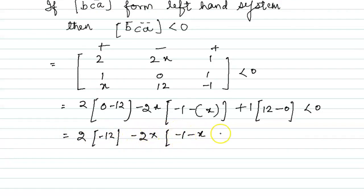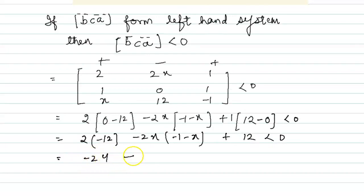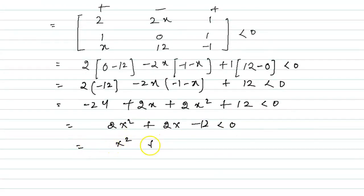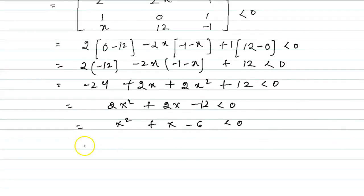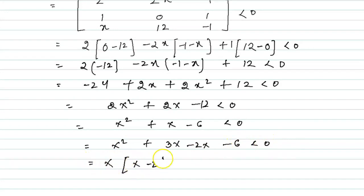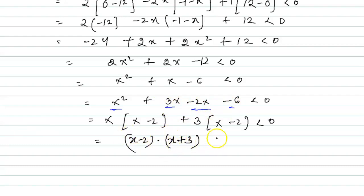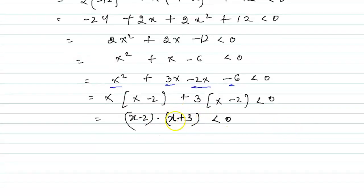Expanding: 2(0·(−1) − 1·1) − 2(1·(−1) − 1·x) + 1(1·x − 0·x) gives us −24 + 2x + 2x² + 12 < 0, which simplifies to 2x² + 2x − 12 < 0. Dividing by 2: x² + x − 6 < 0.